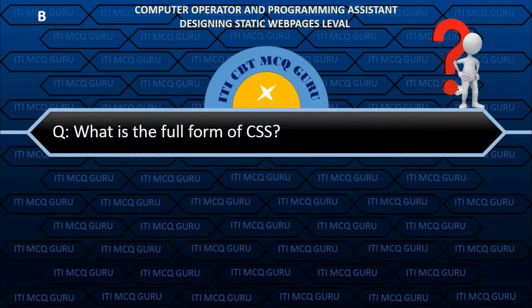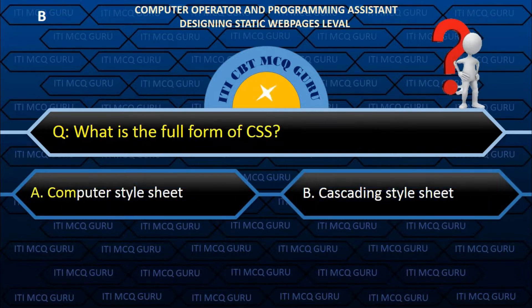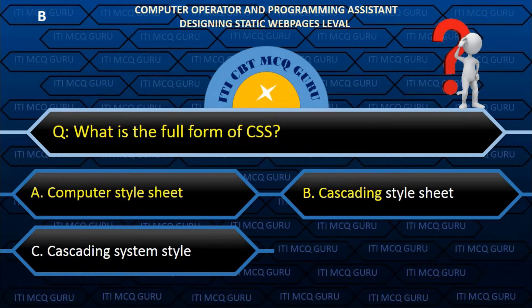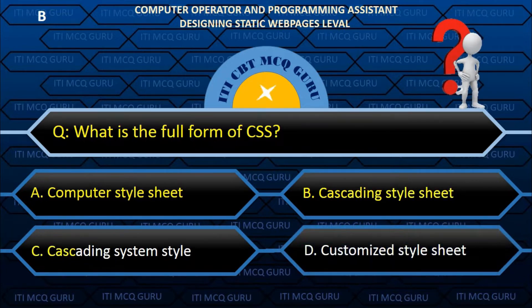What is the full form of CSS? B. Cascading Style Sheet.